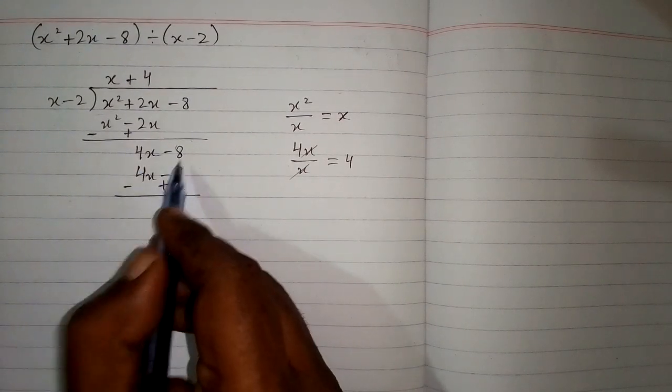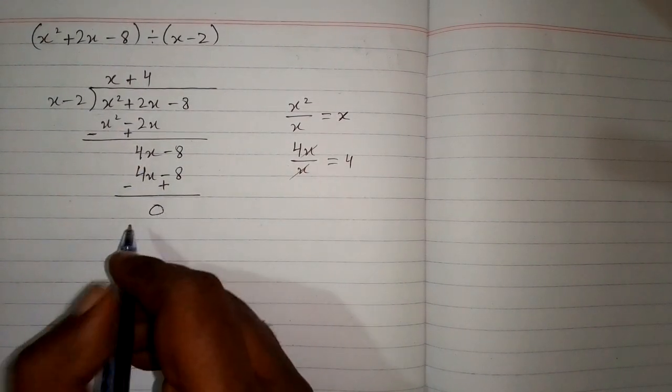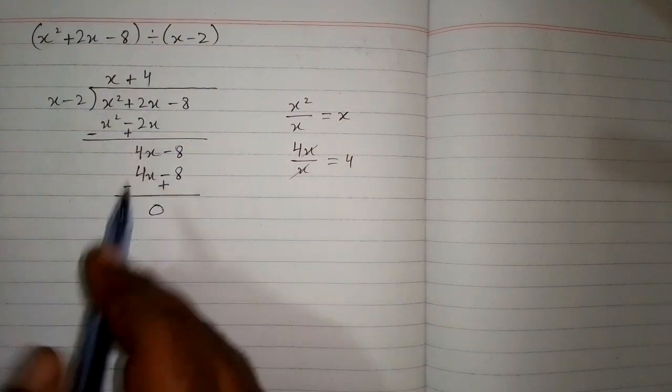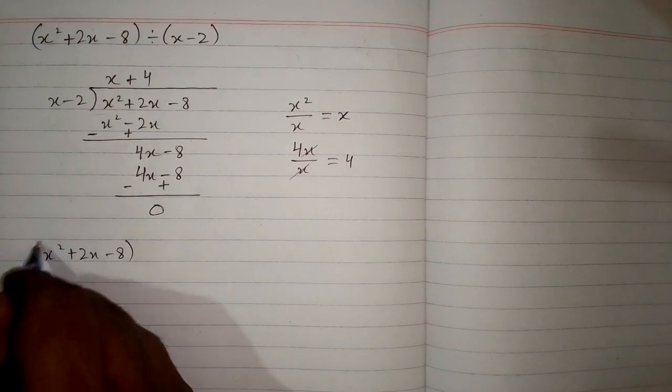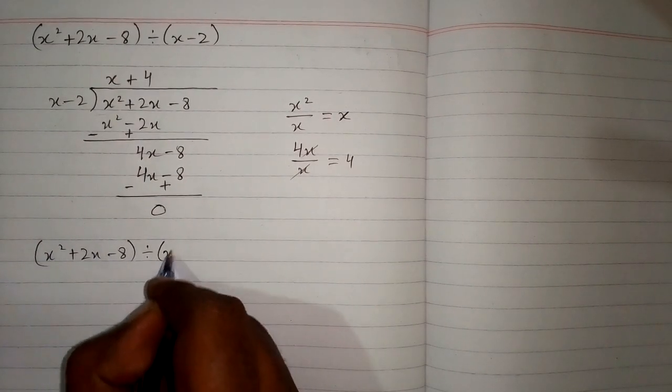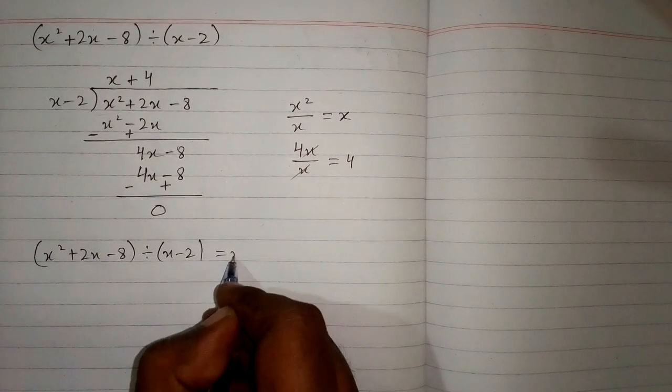So 4x minus 4x is 0 and minus 8 plus 8 is 0. So the answer is x plus 4. When we divide x square plus 2x minus 8 by x minus 2, we have x plus 4.